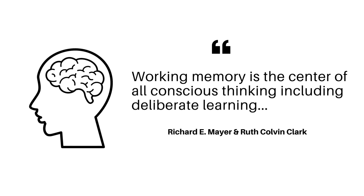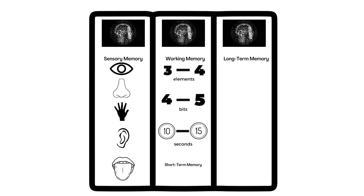We're going to move on to working memory. Richard Mayer, a world-renowned psychologist, and Ruth Clark defined working memory as the center of all conscious thinking, including deliberate learning. The thing about working memory is that it is limited in capacity. Research has shown — listen to this — that learners can process an estimated three to four elements of new information at one time, or four to five bits of information simultaneously.